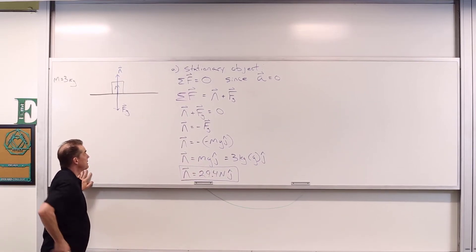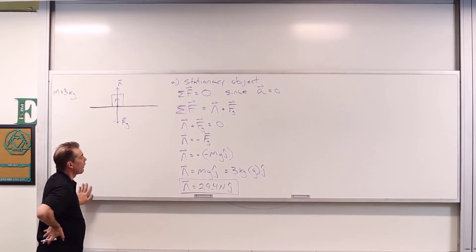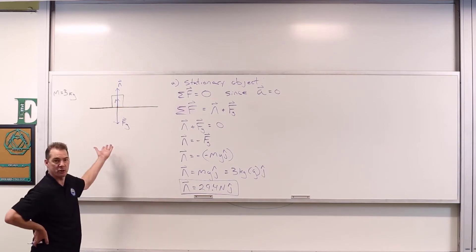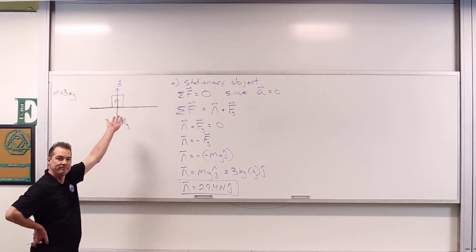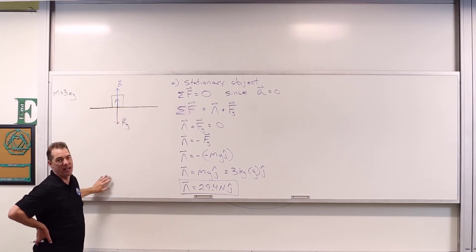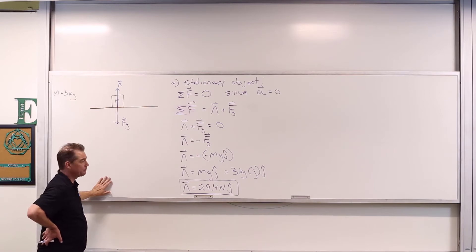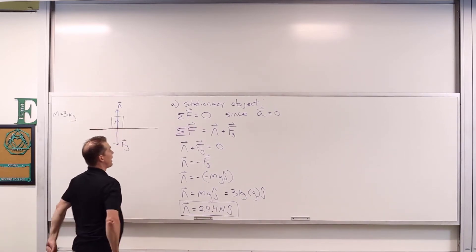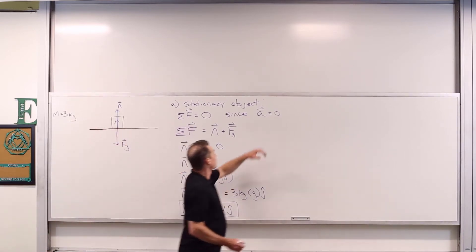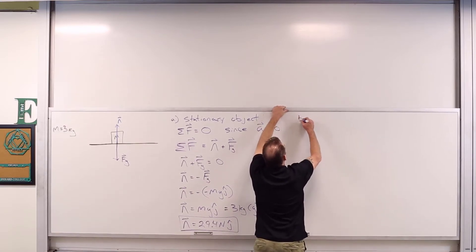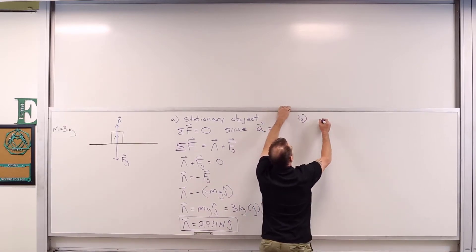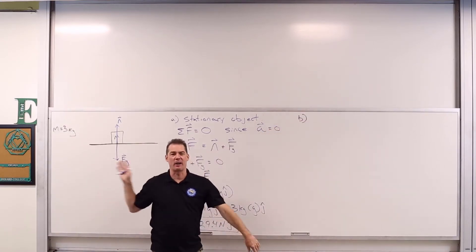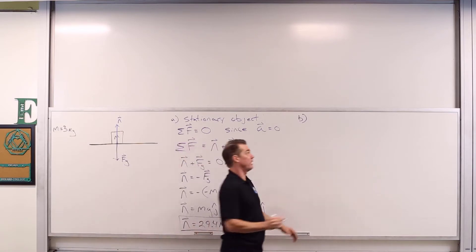So that's the normal force for part A — 29.4 Newtons — which is equivalent to the object's weight. The surface has to bear the weight of the object. Now let's take the same scenario but switch over to part B: the object is now going to be sliding across the surface at a constant rate.